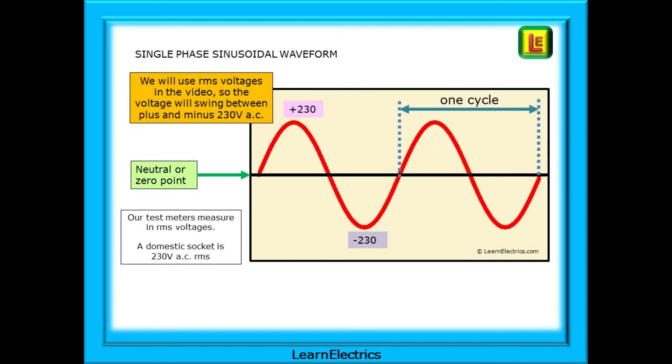Single-phase has just one sinusoidal waveform on the conductors. In the UK, this is at a frequency of 50 cycles per second, often called 50 hertz. We will use RMS voltages in the video, so the voltage will swing between plus and minus 230 volts AC. Our test meters are set up to measure in RMS voltages, root mean square, and this is explained in another video. For now, a 230 volt domestic socket will give us a voltage of about 230 to 240 volts RMS. The black line represents the neutral or zero point for the circuit.